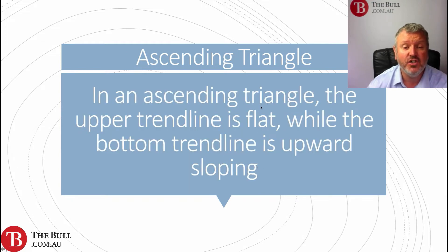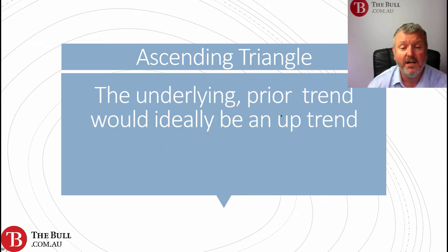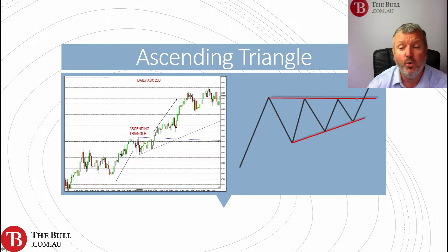An ascending triangle: the upper trend line is flat while the bottom trend line is upward sloping. This is generally thought of as a bullish pattern where we look for an upside breakout, primarily with the underlying prior trend ideally being higher. Looking at the infographic on the right, we have a prior uptrend; the market then goes into the consolidation pattern — an ascending triangle with successive higher lows but highs all at the same level.